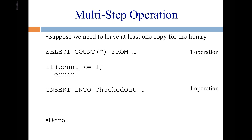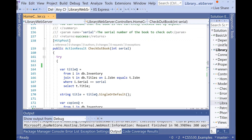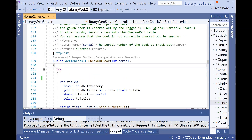Each of these two SQL queries will be one operation, running in their own separate transactions — one transaction for the select, a different transaction for the insert — with a little bit of C# logic in between to check the count. Let's look at the code. I've modified my library web server to do this. Here's the checkout book controller, already modified to add this restriction where we won't let somebody check out the last available copy.